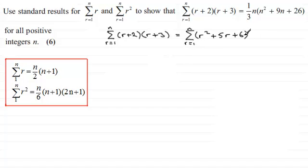Now we've got three terms here, and we can then put sigma notation around each term. So we're going to have sigma of r squared, going from 1 to n.